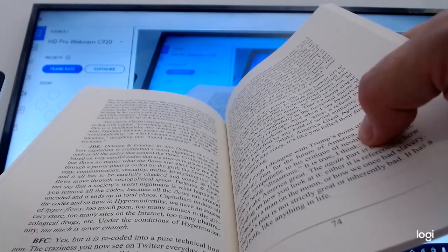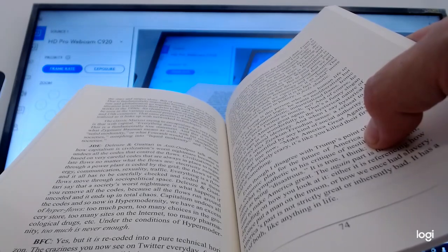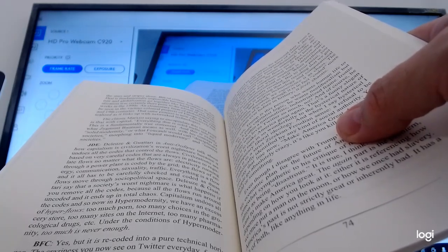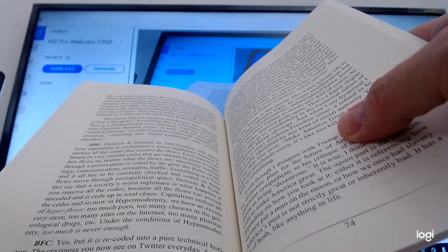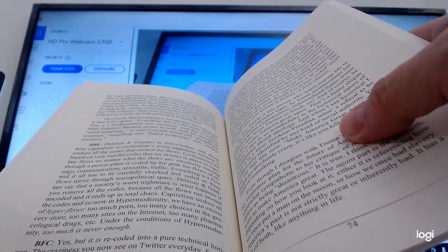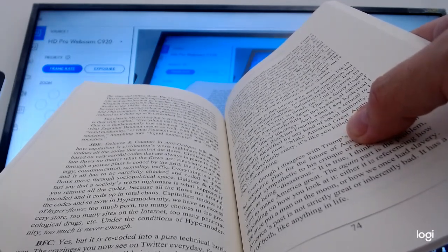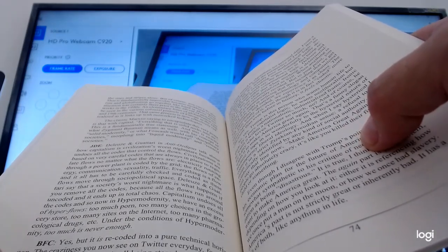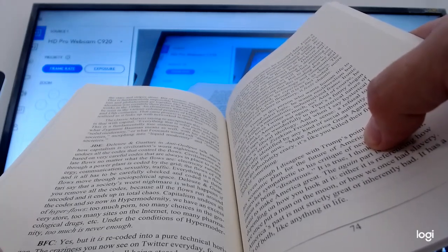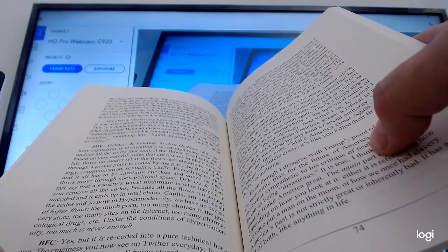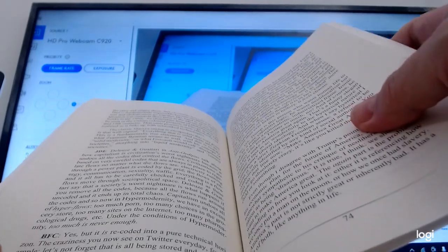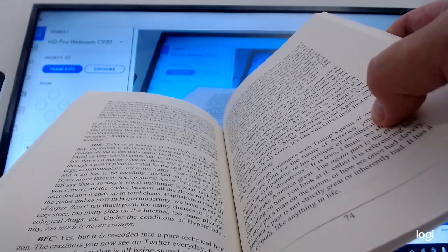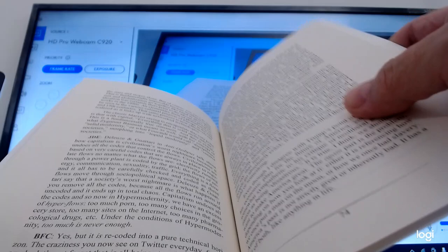Ebert: Deleuze and Guattari in Anti-Oedipus talk about how capitalism is civilization's worst nightmare because it undoes all the codes that control the flows. Civilizations are based on very careful codes that are always in place to regulate flows no matter what the flows are. Electricity running through a power plant is coded by the grid. The flows of energy, communication, sexuality, traffic—everything is a flow and it all has to be carefully checked and coded. Deleuze and Guattari say that a society's worst nightmare is what happens if you remove all the codes because all the flows run around uncoded and it ends up in total chaos. Capitalism undoes all the codes.